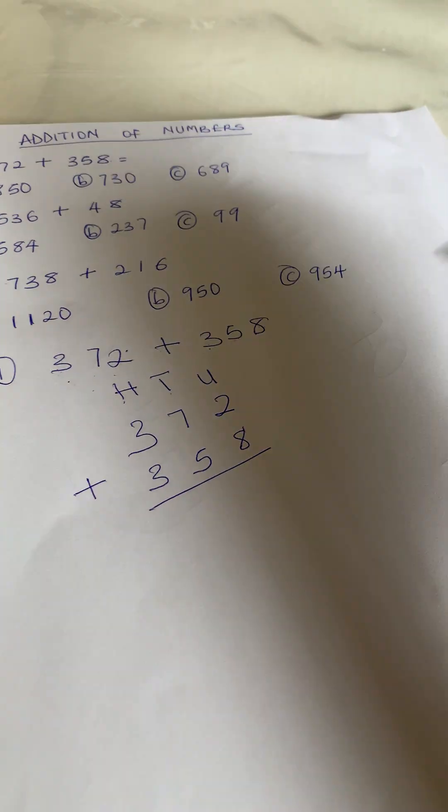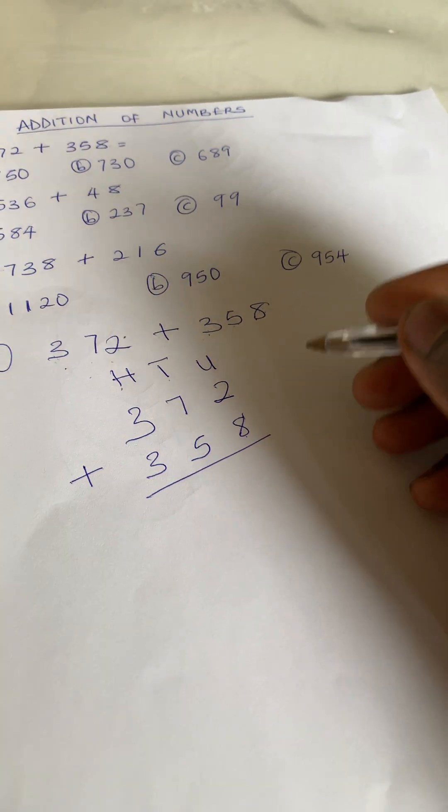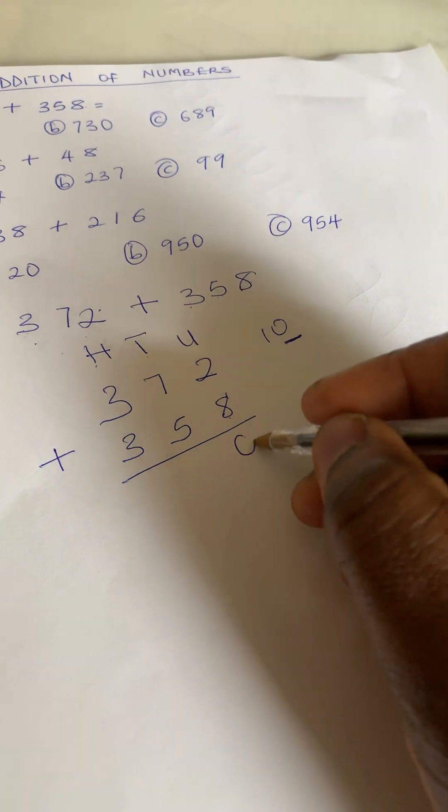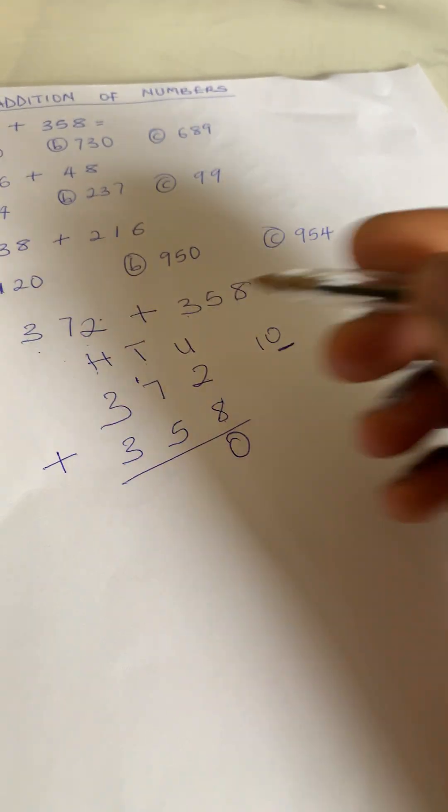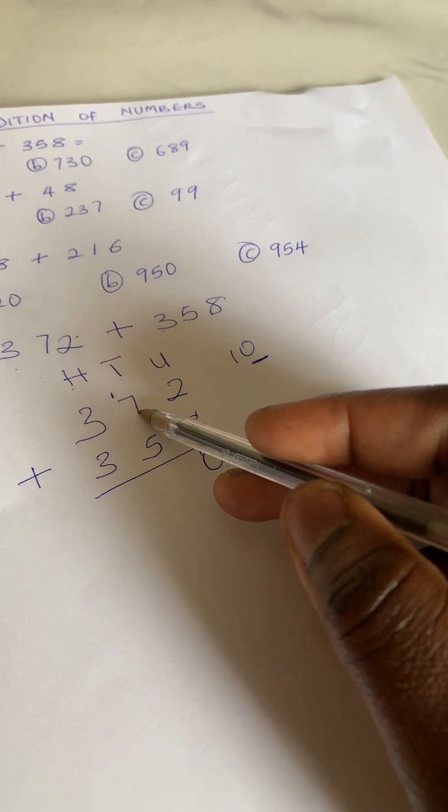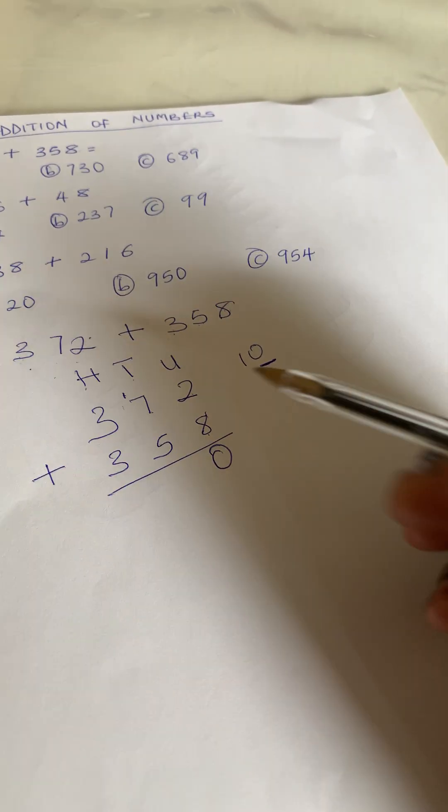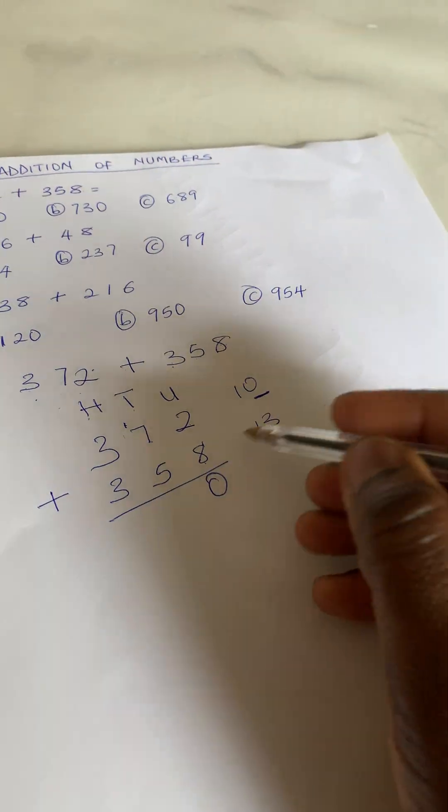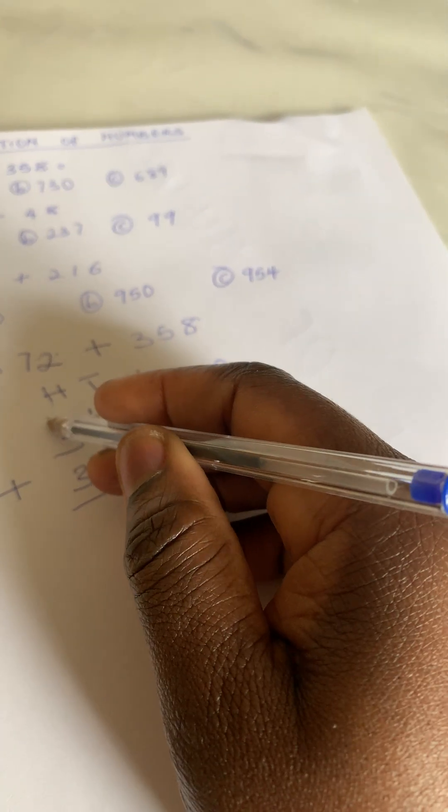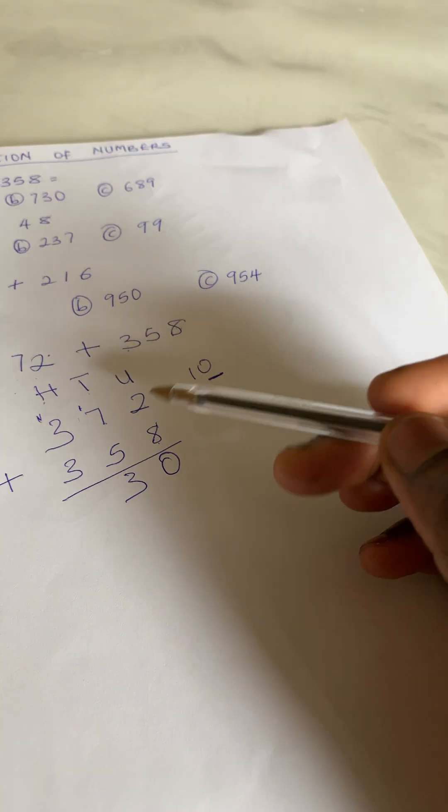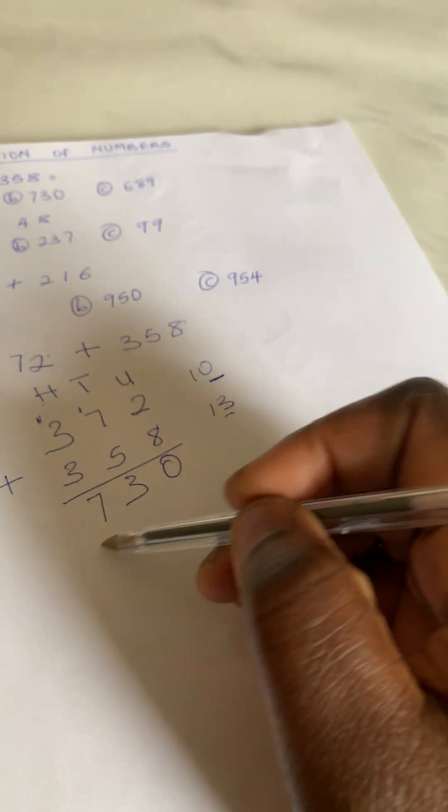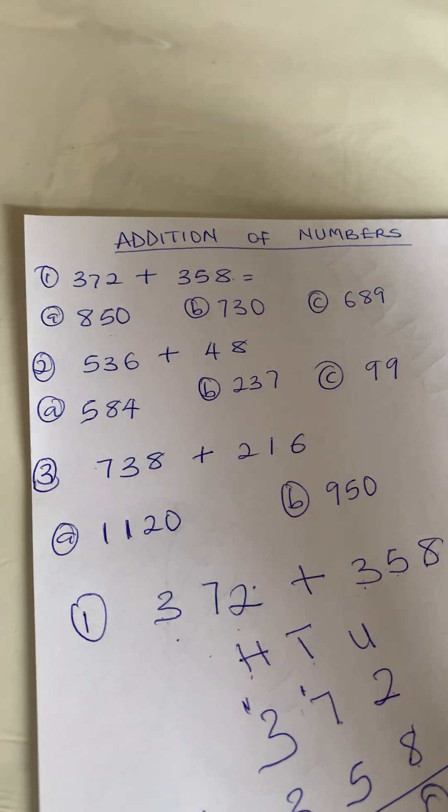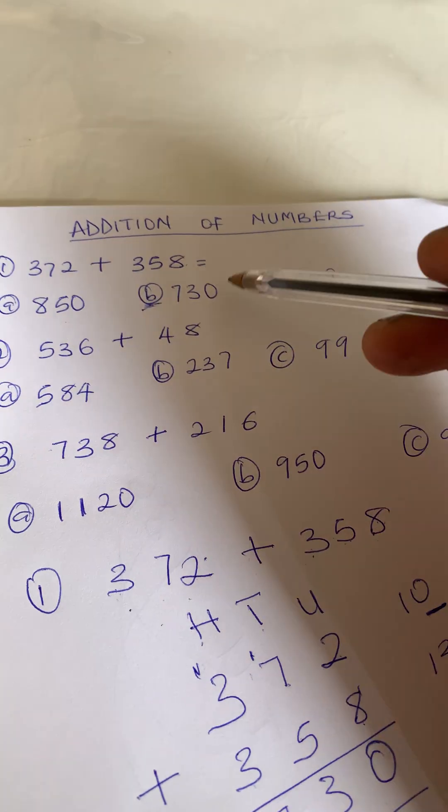8 plus 2 is 10. You write the last digit from the right-hand side: put zero, then carry the 1. 1 plus 7 is 8, 8 plus 5 is 13. You write 3, carry 1. 3 plus 1 is 4, plus 3 is 7. So the answer is 730. Let's check our options: b is 730. This is the correct answer.